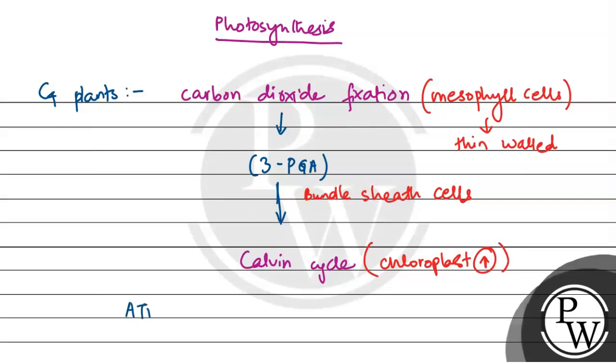Where ATP and NADPH, which was produced during the light reactions, is utilized to form glucose.